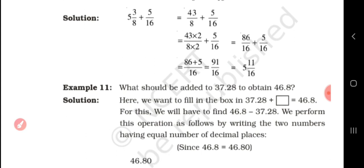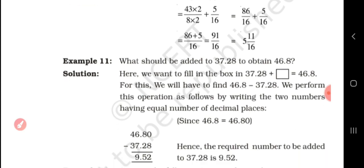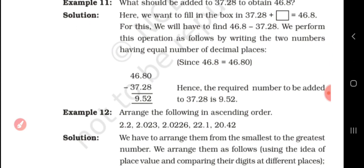What should be added to 37.28 to obtain 46.8? We need to find the value for the box in 37.28 plus blank equals 46.8. To find this, we subtract: 46.8 minus 37.28. Since 46.8 equals 46.80, we perform the subtraction with equal decimal places. The result is 9.52. So 9.52 should be added to 37.28 to obtain 46.8.